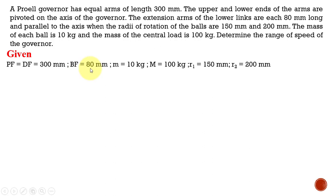The value of PF is 80 mm. The small m value is 10 kg — that is the mass of the ball. Capital M is 100 kg, which is the central load attached to the sleeve. R1, corresponding to the minimum speed, is 150 mm. R2, corresponding to the maximum speed, is 200 mm. Now let us see how to draw the configuration.